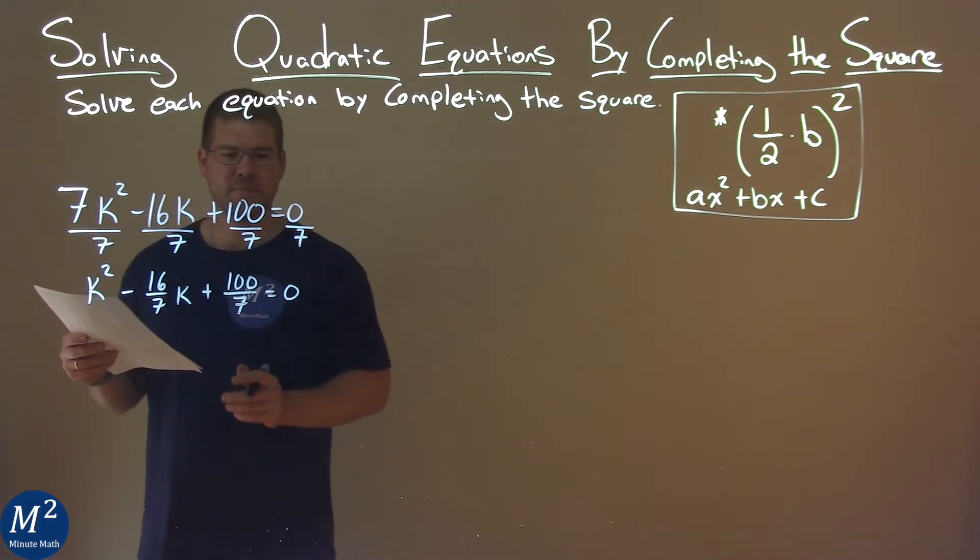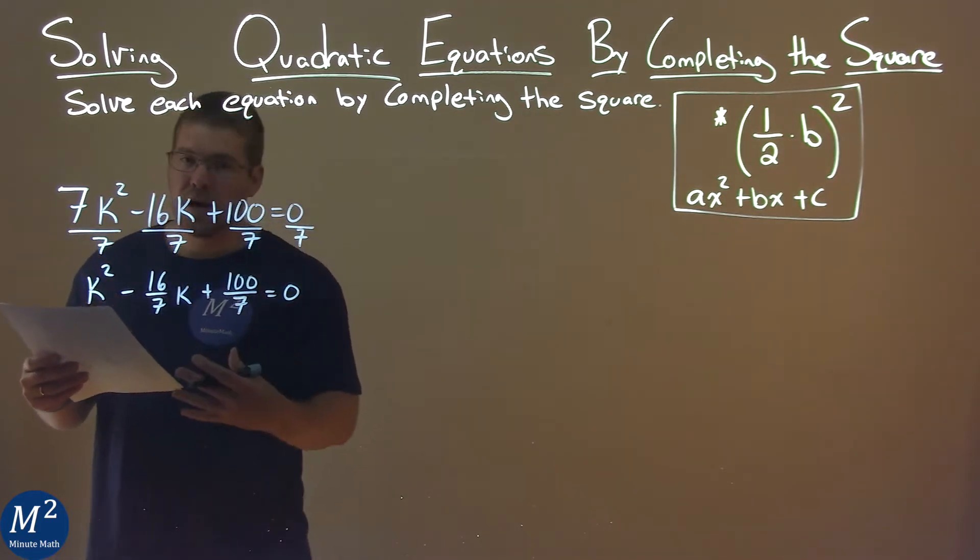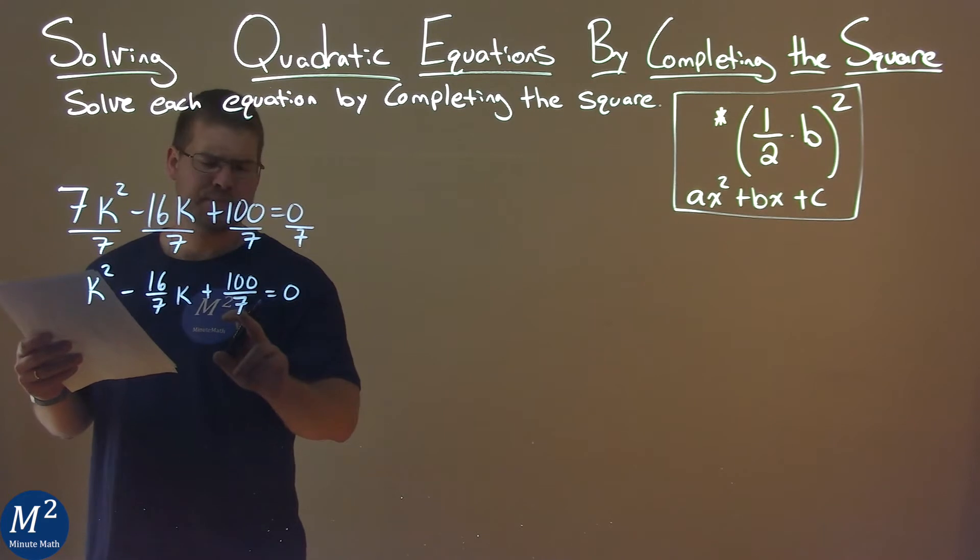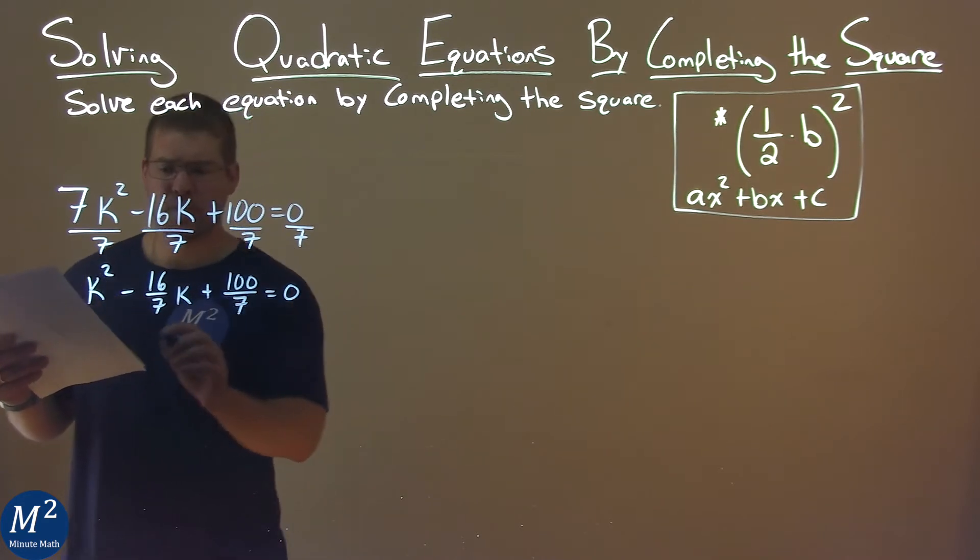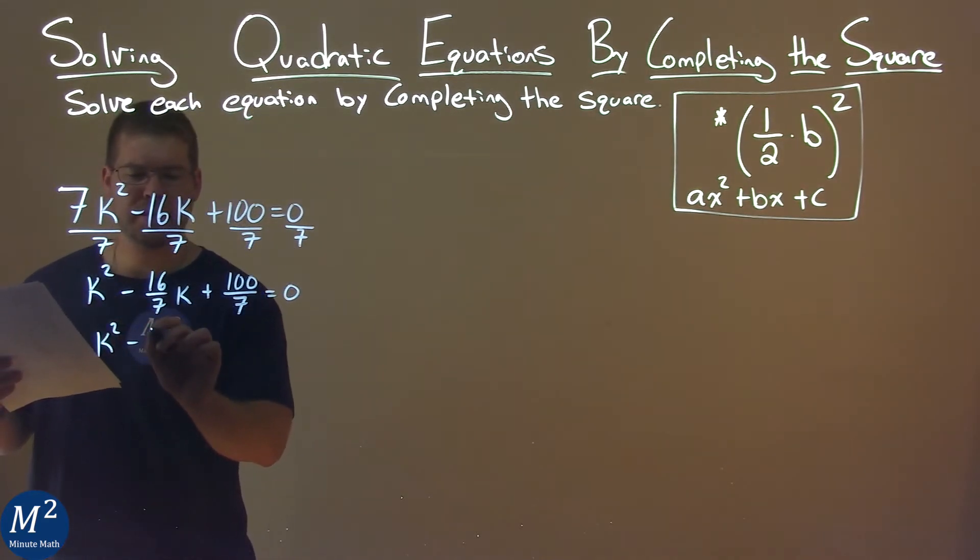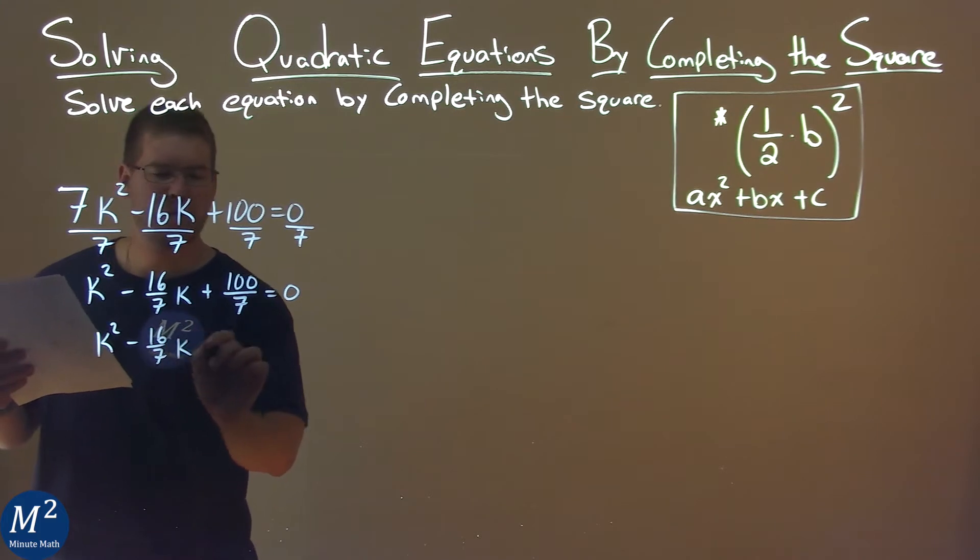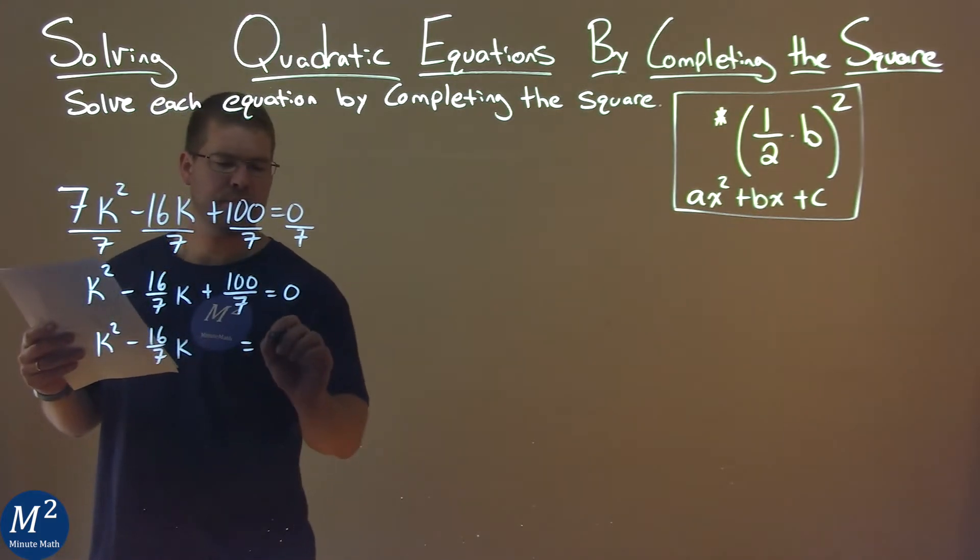Not pretty. Same process still applies. Don't be afraid of the fractions. Subtract 100 over 7 to both sides, so you have k squared minus 16 sevenths k equals negative 100 over 7.